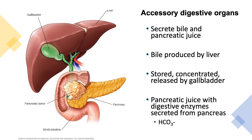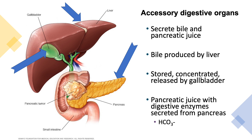The accessory digestive organs secrete bile and pancreatic juice to aid in digestion within the small intestine. The liver produces bile, which is stored and concentrated within the gallbladder, and then released into the small intestine to help break down lipids. The pancreas makes and secretes pancreatic juices containing digestive enzymes. Both bile and pancreatic juice contain bicarbonate to help neutralize the acidic chyme that enters the duodenum.